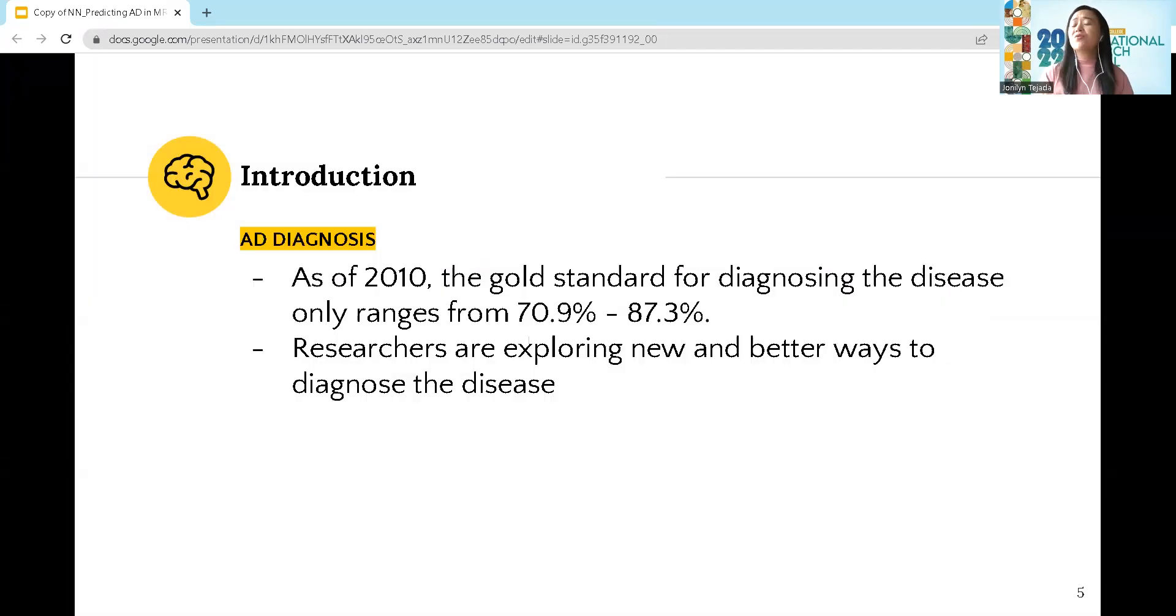However, as of 2010, the gold standard for diagnosing the disease only ranges from 70.9% to 87.3%. With the advent of technology available today, researchers are exploring new and better ways to diagnose the disease, including the use of MRI.